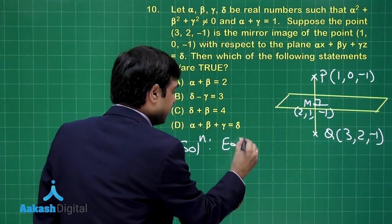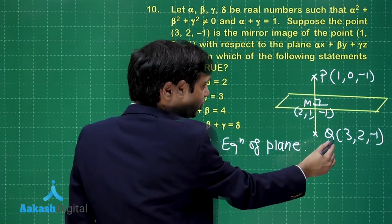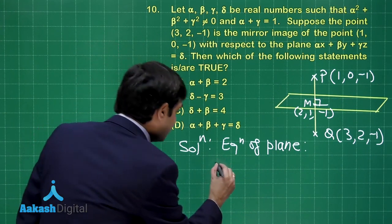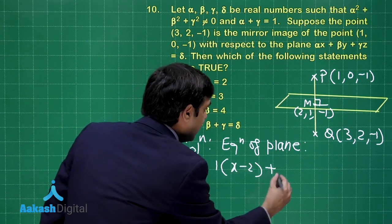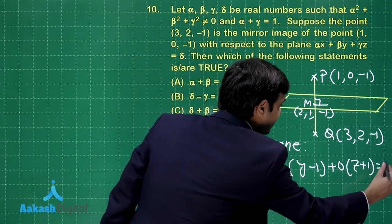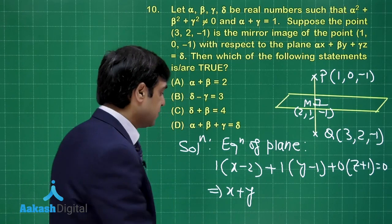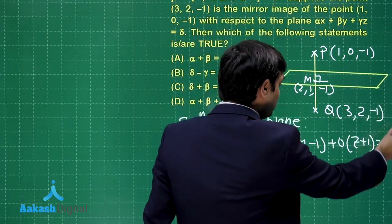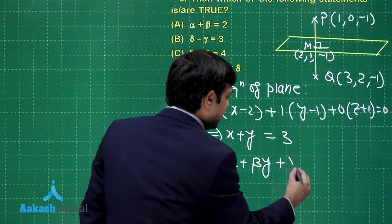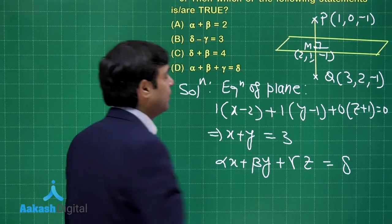Equation of the plane: the direction ratios of PQ are (2,2,0), or simplified, (1,1,0). So the plane equation is 1·(x−2) + 1·(y−1) + 0·(z+1) = 0, which simplifies to x + y = 3. This is the required plane.